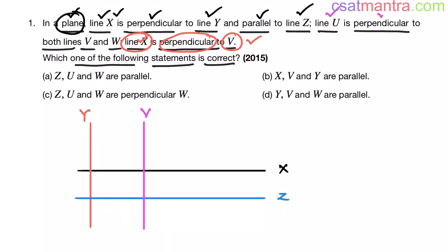Line u is perpendicular to both lines v and w. Line v is already there. Let us draw line u which is perpendicular to line v. This is line u which is perpendicular to line v. They both are perpendicular.